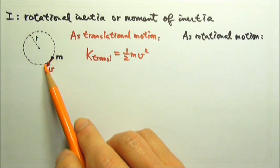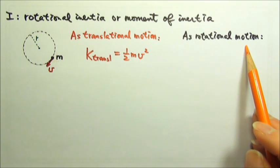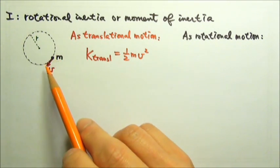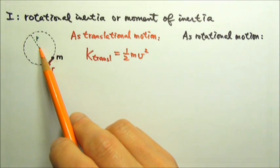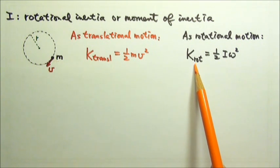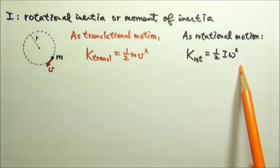For this same motion, we can also treat it as a rotational motion. It is a mass m going around, rotating about a fixed axis that is right here at the center of the circle. So we can say this point mass m has rotational kinetic energy that equals to one-half I omega squared.